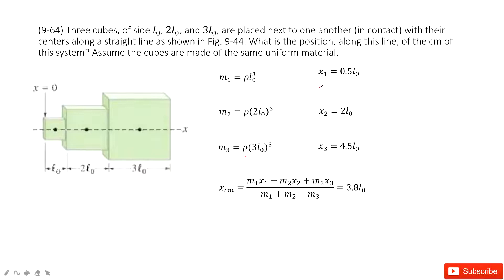Now we need to determine its position. So first one, you can see cube one, the center of mass for it is there, so this is half of L0. This one is, we need to determine this is L0 plus L0, which is 2L0, right?